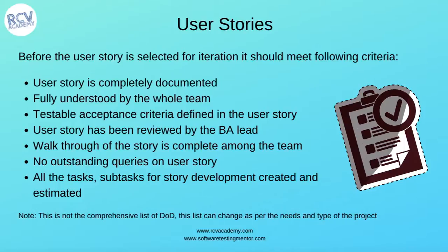This definition of done at the user story level is saying that all these criteria should be met before a user story can be pulled into the iteration. There could also be another definition of done defined at the user story level for when the user story can actually be closed or set as done-done after the iteration or after development work has happened. So there are two levels: the pre-iteration definition of done when picking the story, and another definition of done for when the story can be marked as finished.